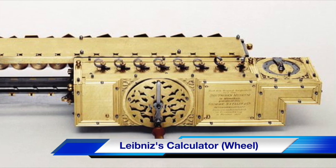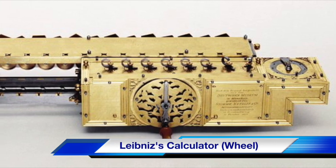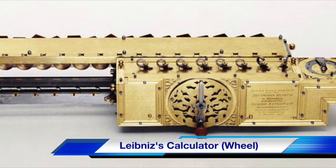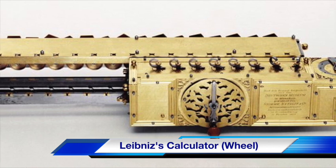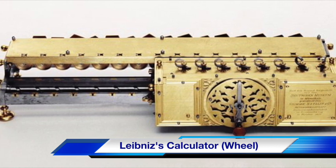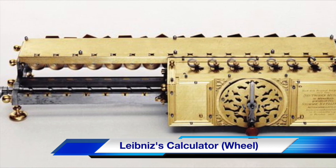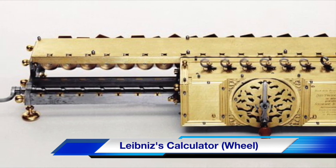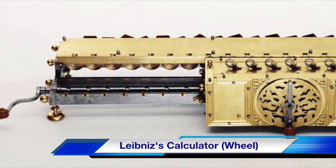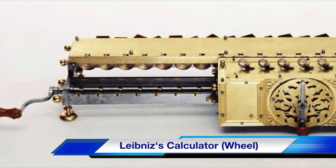Leibniz's calculator was developed by German mathematician Gottfried Leibniz. This mechanical device was an improvement of the Pascaline. It was able to multiply and divide.